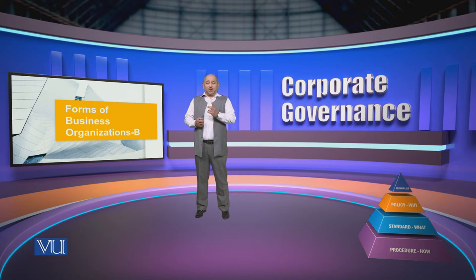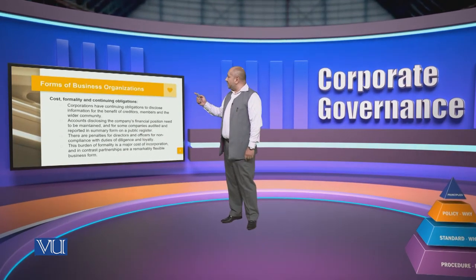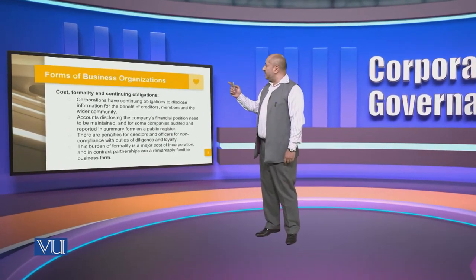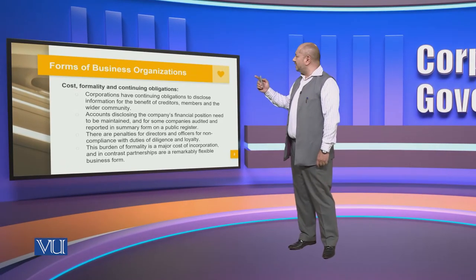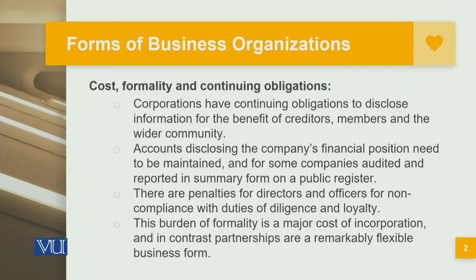The two characteristics we talked about earlier were: one, that these organizations are perpetual, and secondly, that they have limited liability. The other important characteristics of business organizations are that they have an additional cost, they have formality, and thirdly they have continuing obligations. Under the corporate body, corporations have continuing obligations to disclose information for the benefit of the creditors, members, and the wider community.